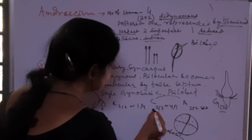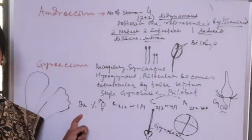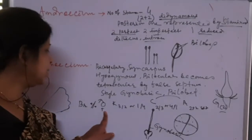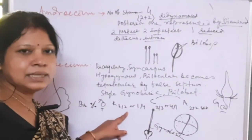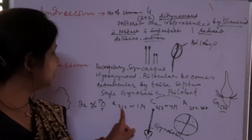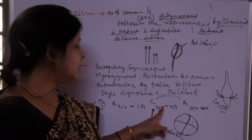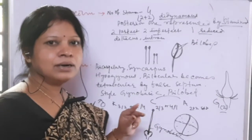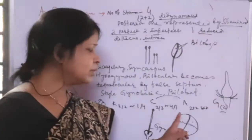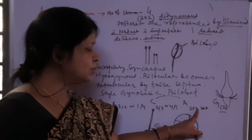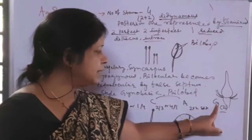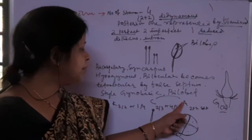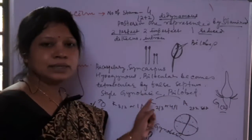The floral formula: bracteate (Br), zygomorphic (%), bisexual. Calyx: (3+2) or (1+4). Corolla: (2+3) or (4+1). Androecium: 2+2 didynamous, with one staminode. Gynoecium: 2 syncarpous carpels with superior ovary (G with bar below). The stamens are epipetalous — attached to the base of the corolla tube — shown by a bar above A and C in the formula.